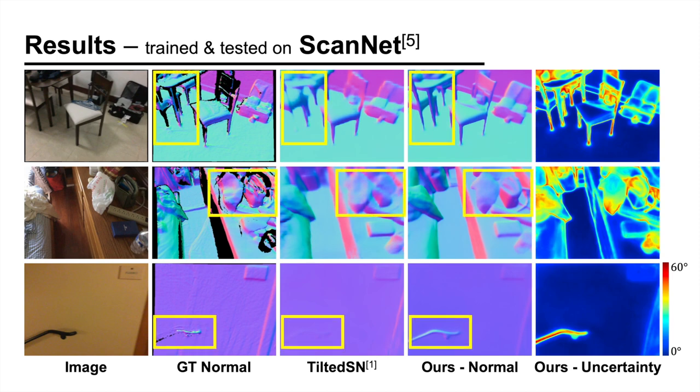Compared to TiltedSN, our method shows better performance especially on small structures and near-object boundaries. We can also see that the estimated uncertainty is high for such pixels.